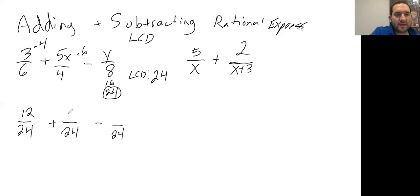4 times 6 is 24, so 5x times 6 is 30x. 8 times 3 would be 24, so you're going to have 3y.